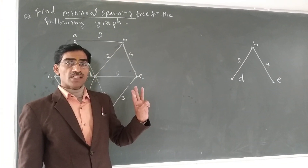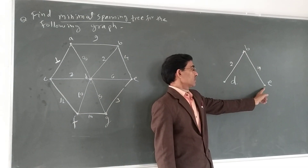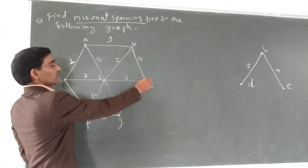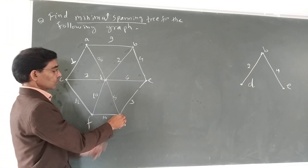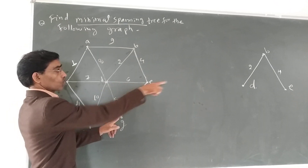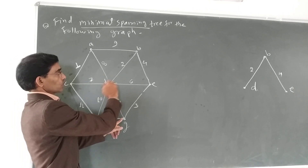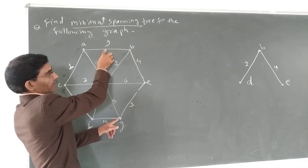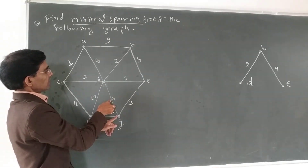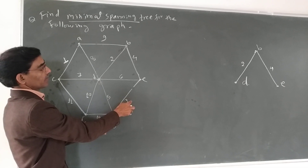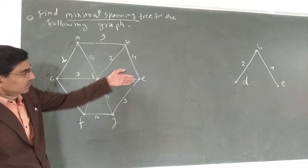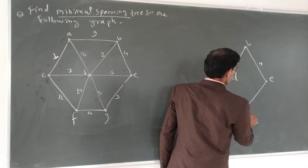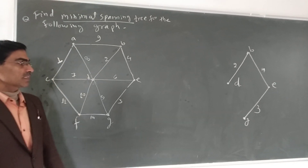अब हमारे पास 3 vertices हैं: D, B, E। इनसे जुड़े सारे edges में से minimum देखिए। E के साथ 3 है जो G को include करेगा। 6 लेंगे तो circuit form होगा। 2 पहले ले चुके हैं। B के साथ 9 है। E के साथ 3 सबसे minimum है, तो EG लेते हैं।